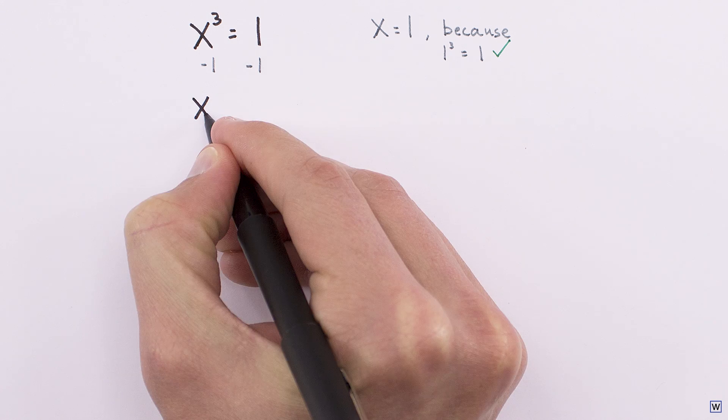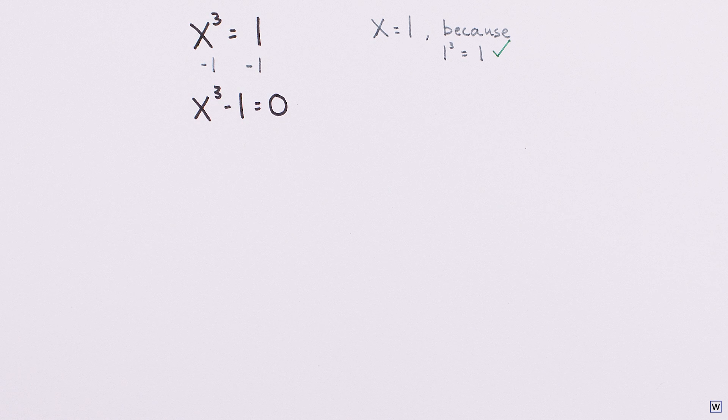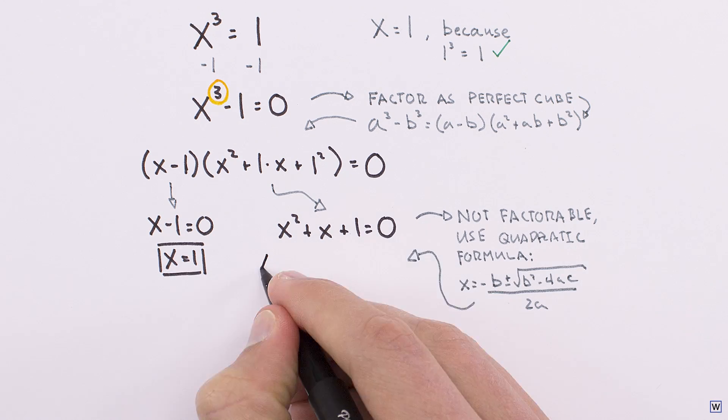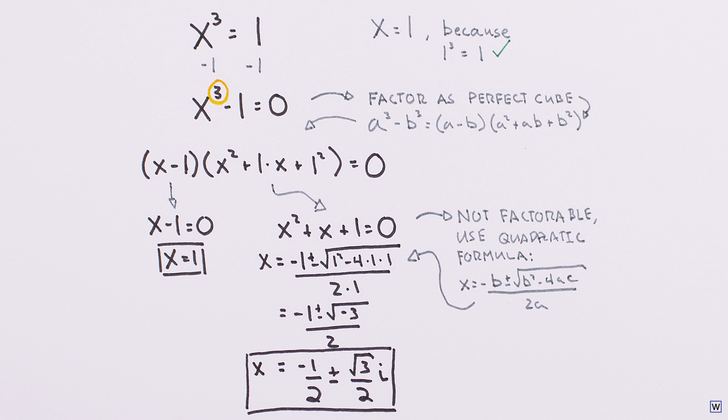We can rearrange our equation as x cubed minus 1 is equal to 0 to make it a more obvious polynomial, and since our highest power is 3, this equation must have 3 solutions. There is an algebraic way to find all 3 answers, but it involves perfect cube factoring and the quadratic formula, and takes some work.